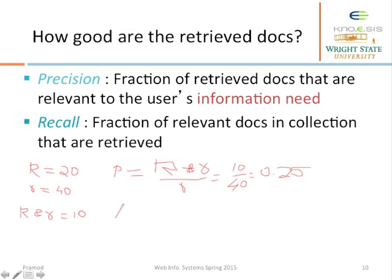How do we compute recall? Recall equals R-and-r divided by capital R — so instead of retrieved documents in the denominator, we use capital R, the relevant documents. The numerator is 10 as before, and capital R is 20, so recall is 50%.